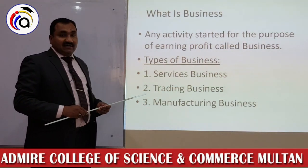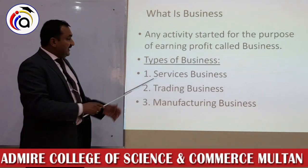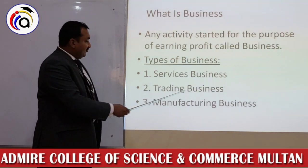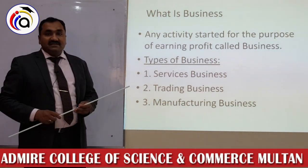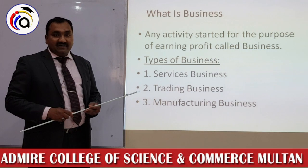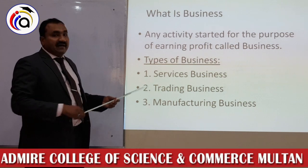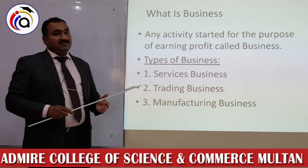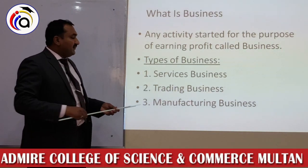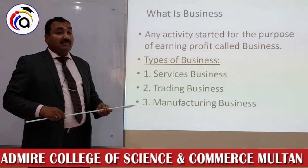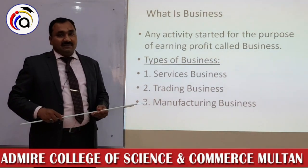Now we come to the types of business. There are three types: first is services business, second is trading business, and third is manufacturing business. In services business, you provide services — for example, doctors and teachers. In trading, you buy and sell ready-made goods. In manufacturing, you make goods and sell them. Thank you, students.